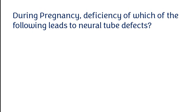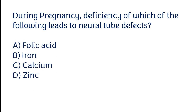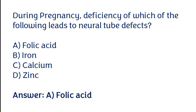During pregnancy, deficiency of which of the following leads to neural tube defects? Folic acid, iron, calcium, or zinc. The correct answer is option A — folic acid deficiency leads to neural tube defects during pregnancy.